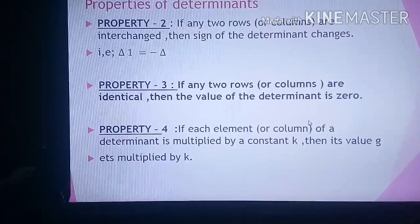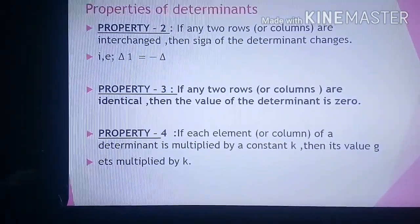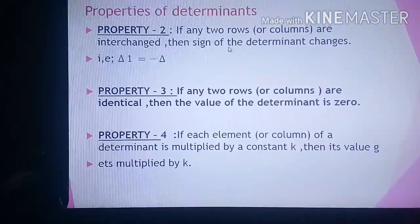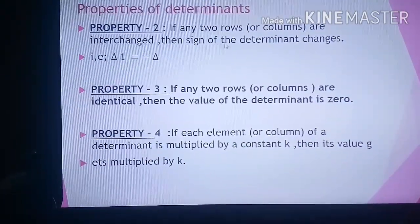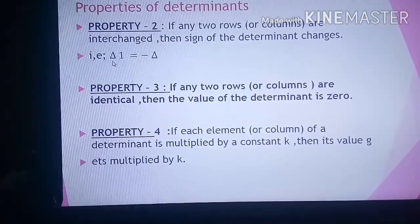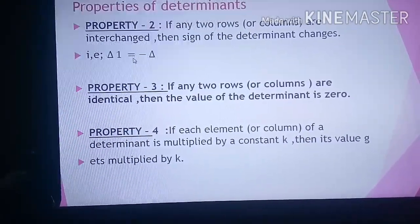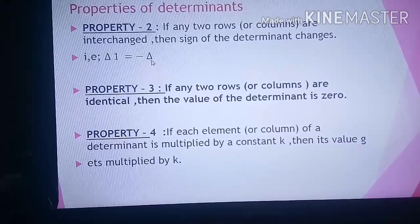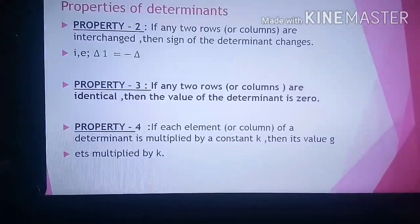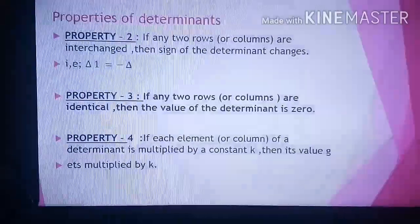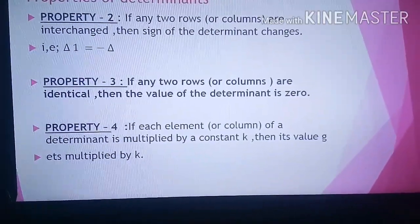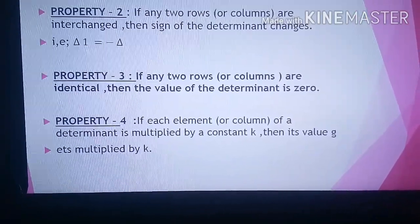Next property: if any two rows or columns are interchanged then the sign of the determinant changes. That is, if the new determinant is delta 1, then delta 1 equals minus delta. Property 3: if any two rows or columns are identical, then the value of the determinant is 0.